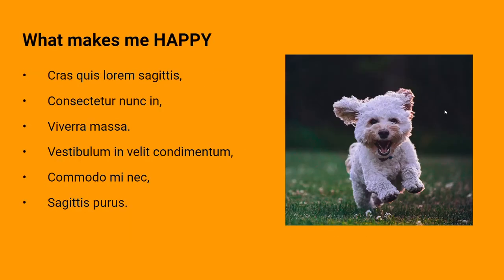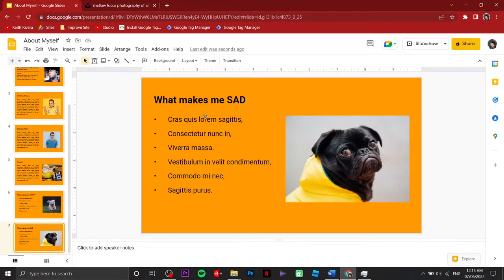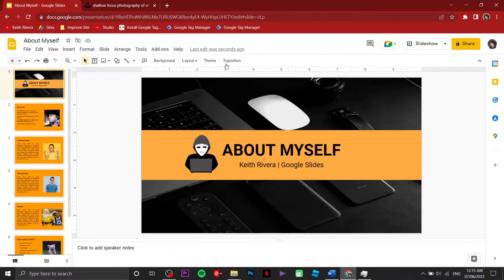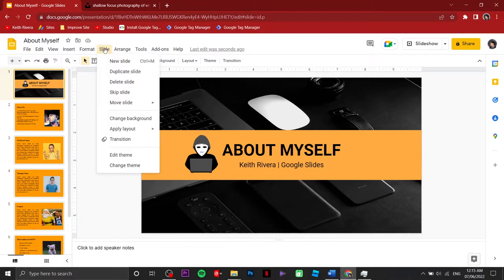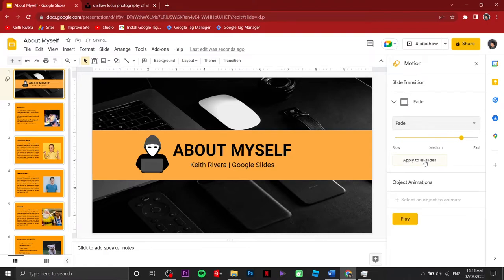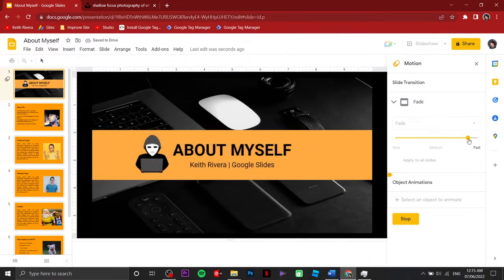Next, we're going to add some animation per slide. To do that, you can click on 'Change Transition' or go to the Slide menu and click Transition. From this panel, since it's currently set to None, I'm going to use Fade. You can adjust how fast the transition will be. Click Play to preview — that's how it's going to look like.